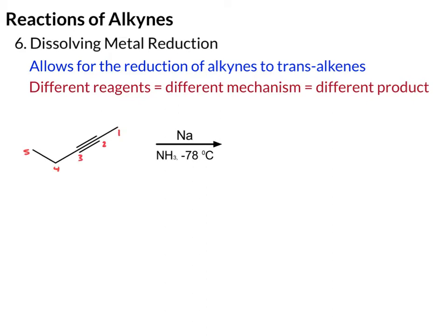So we have five carbons. Since it's trans, you can just draw a regular zigzag structure with five carbons. The double bond ends up between C2 and C3, and the hydrogens that are added are trans — or you can think of the carbon groups as trans.